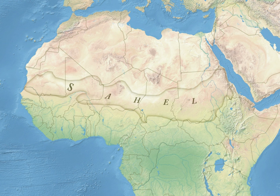Traditionally, most of the people in the Sahel have been semi-nomads, farming and raising livestock in a system of transhumance, which is probably the most sustainable way of utilizing the Sahel. The difference between the dry north with higher soil nutrients and the wetter south with more vegetation is utilized by having herds graze on high-quality feed in the north during the wet season, and trek several hundred kilometres south for more abundant but less nutritious feed during the dry period. In the western Sahel, polygamy and child marriage are common, and female genital mutilation is also practiced.